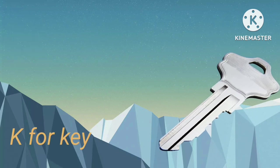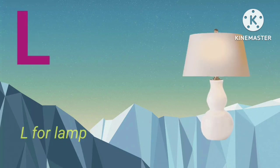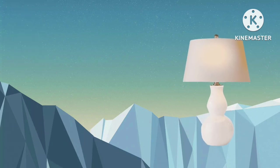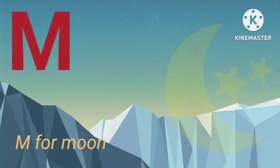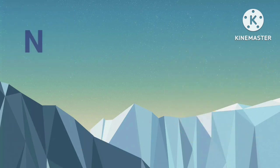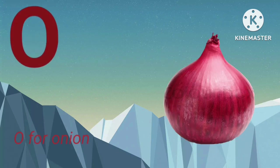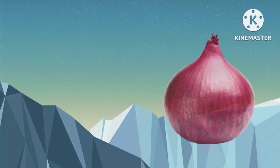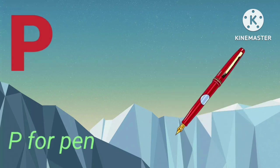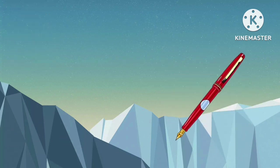K for key, L for lamp, M for moon, N for net, O for onion, P for pen.